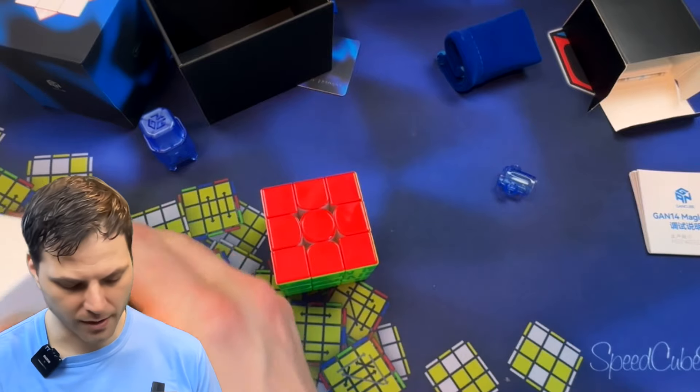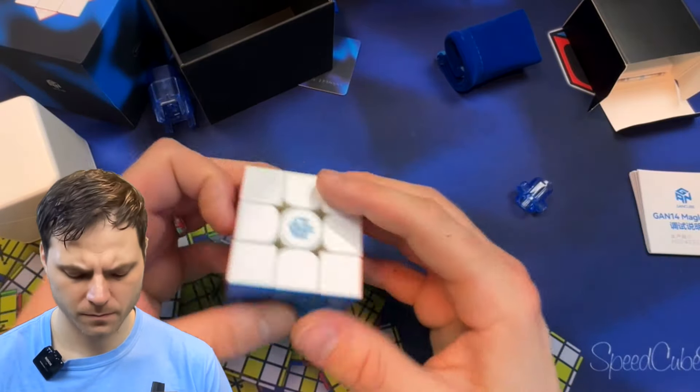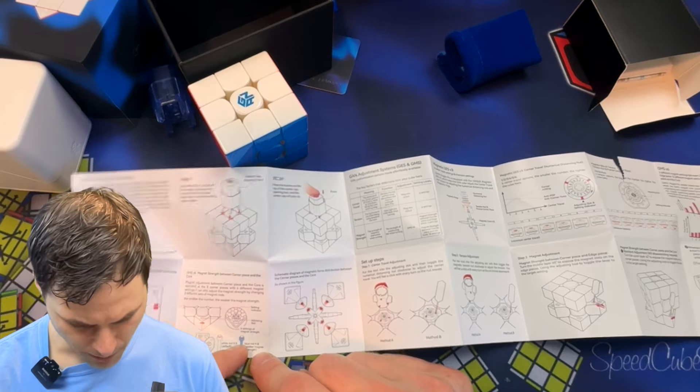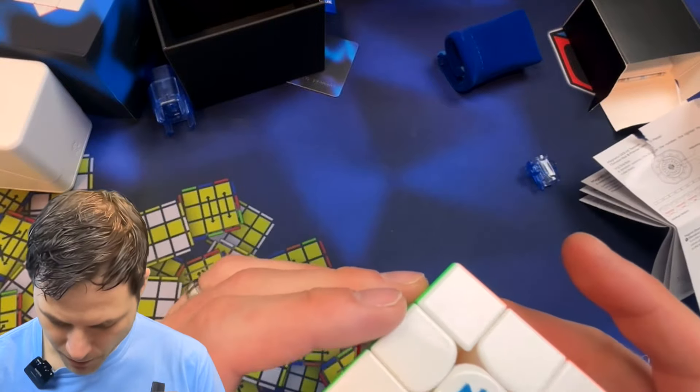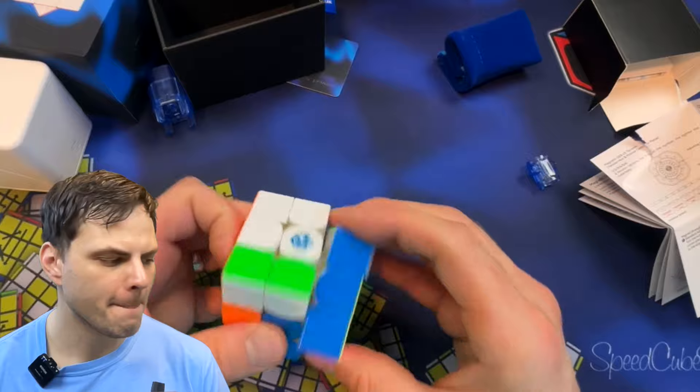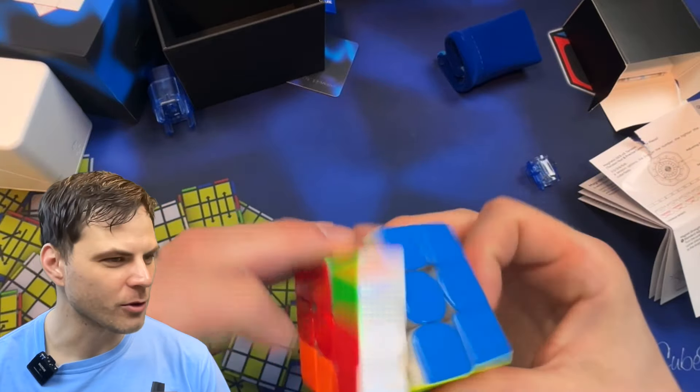The edges are already the strongest setting. How does that feel weaker? The smaller the number, the weaker the magnet strength. So six should be stronger unless I went too far and went back to one. Nope. Well, subtle difference then. No more just doing the same algorithm over and over. Let's do a couple solves.